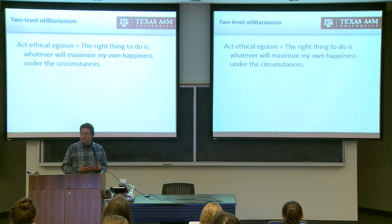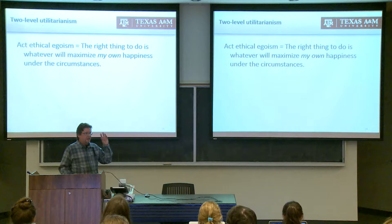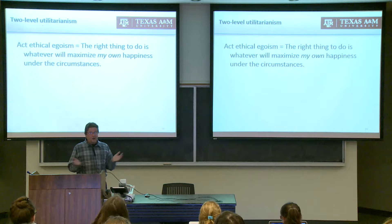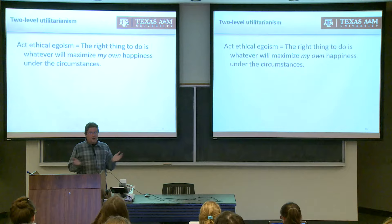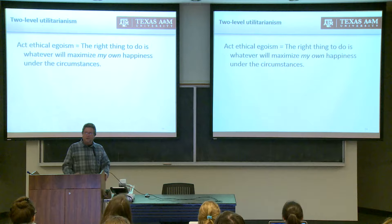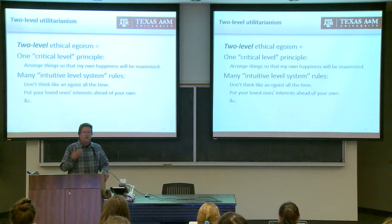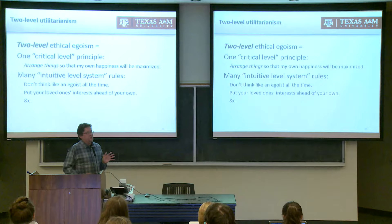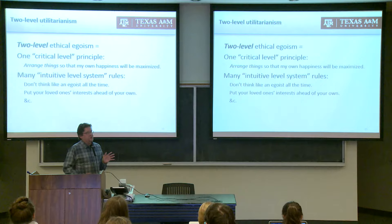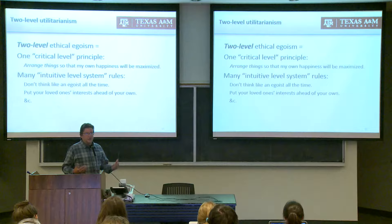Similarly, if I walked around consciously calculating what would maximize aggregate happiness — a generalization of the egoist view applied to everybody — I don't think I'd make a very good friend, lover, or companion animal keeper. An ethical egoist would quickly convince themselves not to always calculate what maximizes self-interest. Their general critical-level principle might be to arrange things so their happiness is maximized, but to achieve that they'd train themselves to act according to intuitive-level rules like 'put your loved one's interests above your own.'